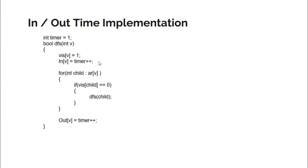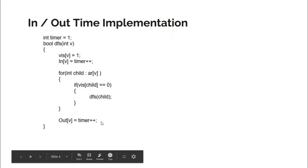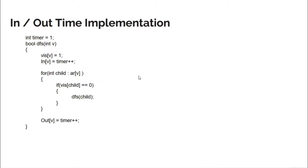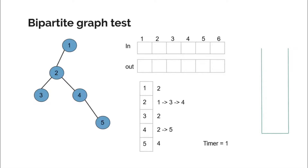We maintain two arrays, in and out, to store these times for each node. We have an integer timer starting from one. In the DFS, as soon as you reach a node you mark it visited and save its in time, then increment the timer. After processing all children, before returning, you save its out time and increment the timer again, so the next call always gets the correct updated time.